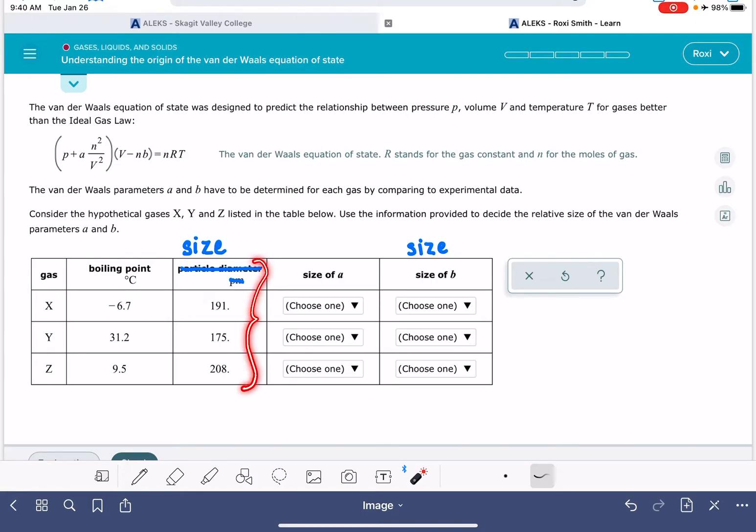So for the three gas molecules, the biggest one out of all of them is the one that has to have the highest correction factor for B. And the smallest gas molecule is the one that is going to need the lowest correction. So again, this B is correcting for the fact that the gases have size. The bigger the size is, the more significant that the correction factor needs to be. And this one is just going to be in the middle.